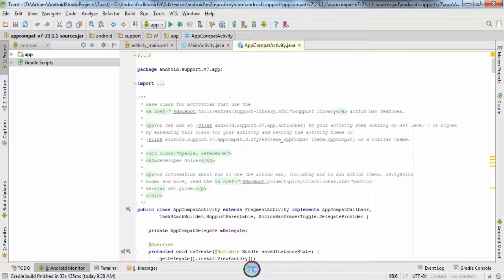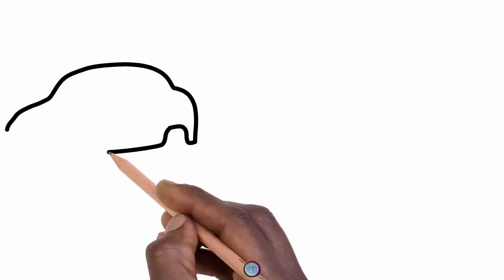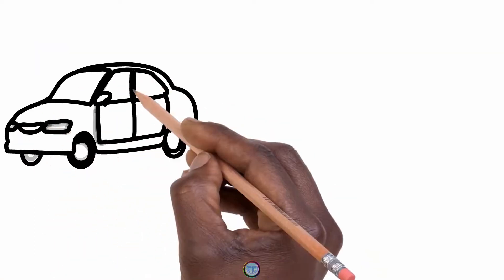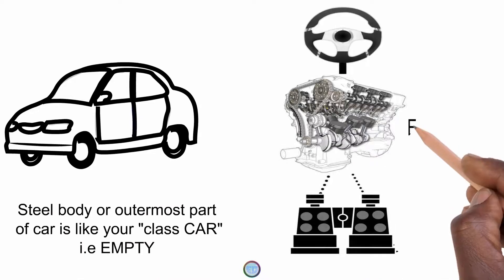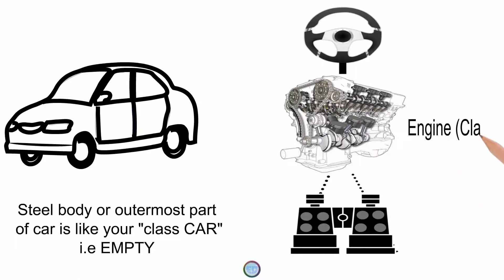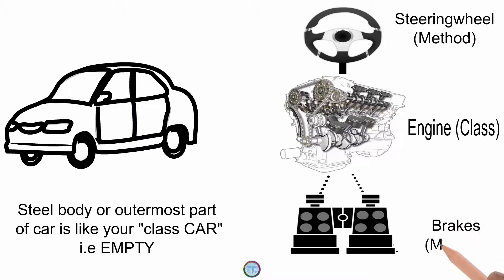To compare this with a real-life example, the skeleton of a car is nothing without the engine and the steering wheel. On the left side you can see just a skeleton of a car, and on the right side there is an engine fitted with steering wheels and brakes. If there is no engine, no steering wheel, and no brakes inside the car, the car is of no use. But if you fit the entire assembly of the engine, steering wheel, and brakes inside the car, the car will function smoothly.